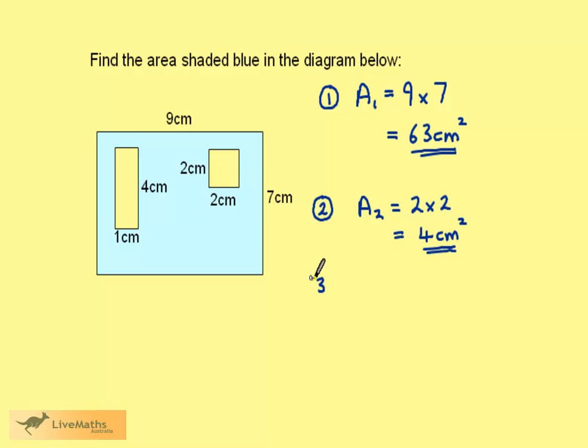Area 3 is the rectangle. The rectangle is 4 by 1, so the area is 4 times 1, which is 4 centimeters squared.